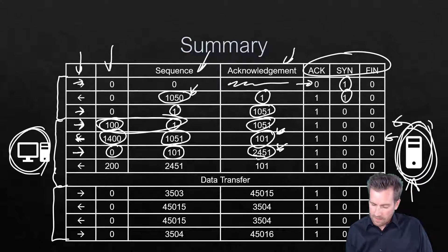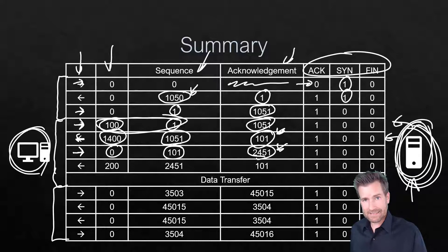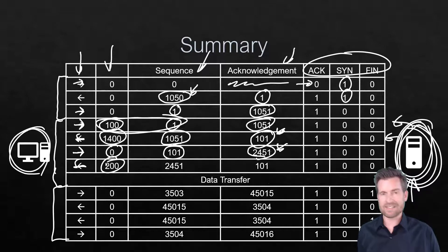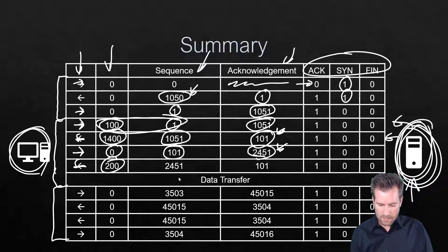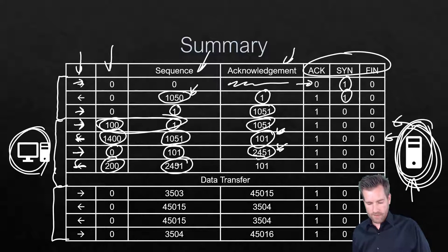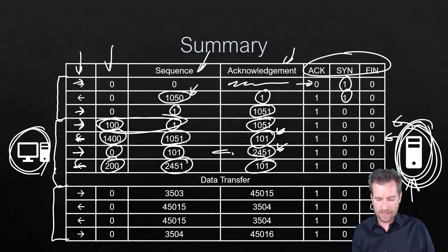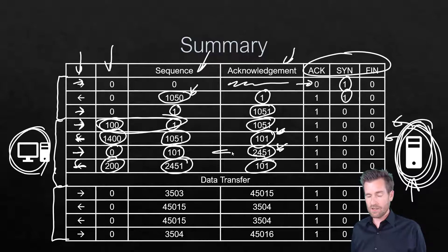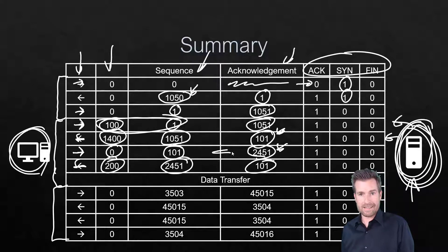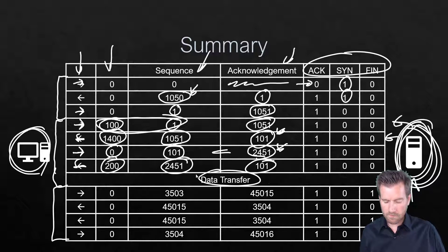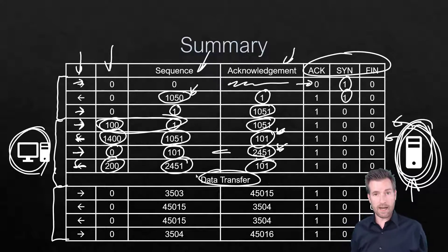The web server is now ready to send the next set of data. In this example, it sends 200 bytes, labeling the first byte as 2451. It's still expecting byte 101 from the PC, because the PC's last message was just an acknowledgement with no payload. This data transfer continues back and forth until the web page is fully loaded on the PC.